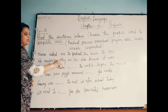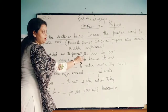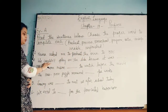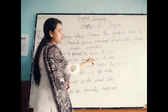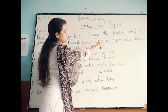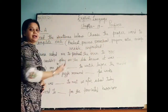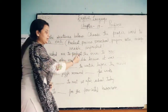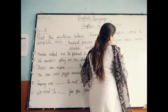Next: We couldn't play on the slide because it was dash. Options: preheat, preschool, retail, untied, unsafe, unfinished. Obviously, the answer is unsafe — because it was unsafe.